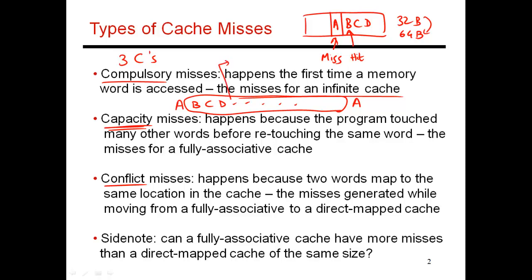If I have touched 800 different unique blocks before I touch A again, I need to look at my cache size. If my cache is large enough to accommodate 1,024 different blocks, I would expect this access to be a cache hit, because there's enough space to retain all of these blocks. But if my cache had only 512 different blocks, I would expect this next access to A to be a cache miss, because at least one of those 800 different blocks should have displaced A. So this miss would be designated a capacity miss — I'm touching 800 different blocks but my cache can only accommodate 512.